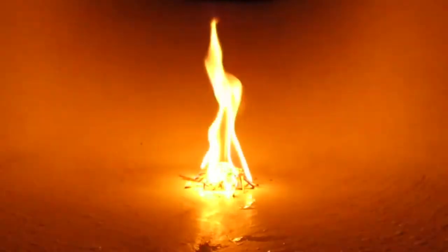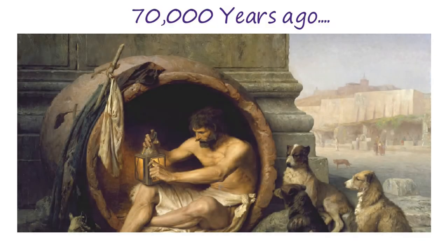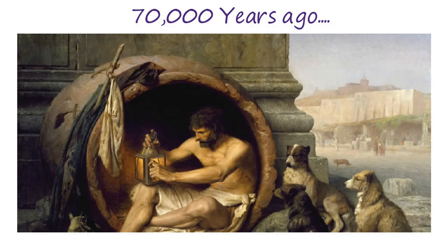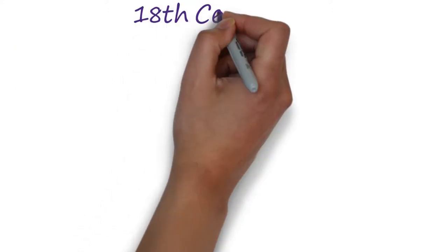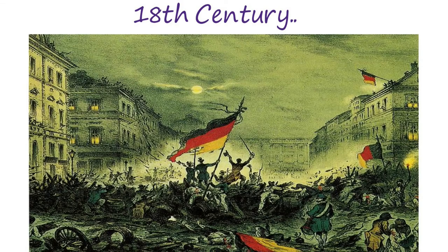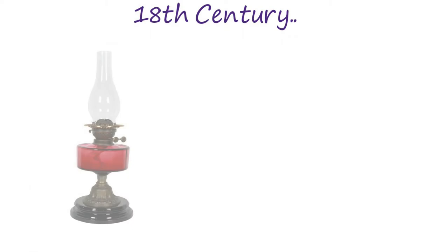As time passed and new energy sources were discovered, new kinds of lamps were invented. In the 19th century, kerosene lamps were introduced in Germany. It was a container with kerosene in which a wick or mantle was dipped that burned. The container had a glass chimney or globe which protected the flame from a draft.